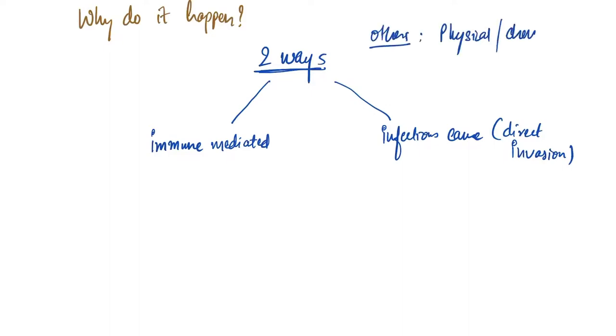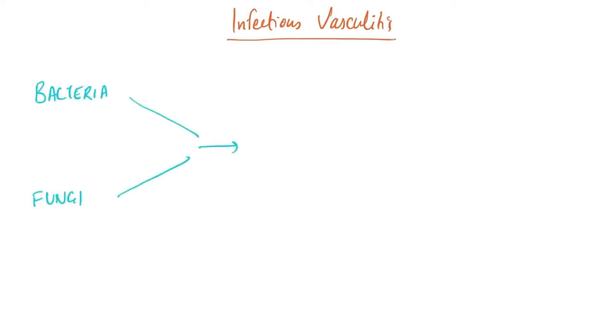There are two types of vasculitis: infectious vasculitis and non-infectious vasculitis. First, infectious vasculitis occurs when bacteria and fungi invade the arteries. The resultant outcome is either weakening of the walls or formation of thrombus or embolus.